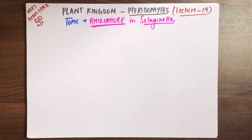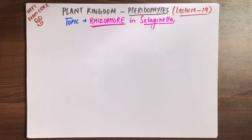What are the Rhizophores in Selaginella? In NCERT, this term is not given, but if you look at previous year's questions for NEET or AIPMT, you will find the question 'What is Rhizophore?' and the Rhizophore option in the Plant Kingdom chapter. This is lecture number 19 of the Plant Kingdom chapter.